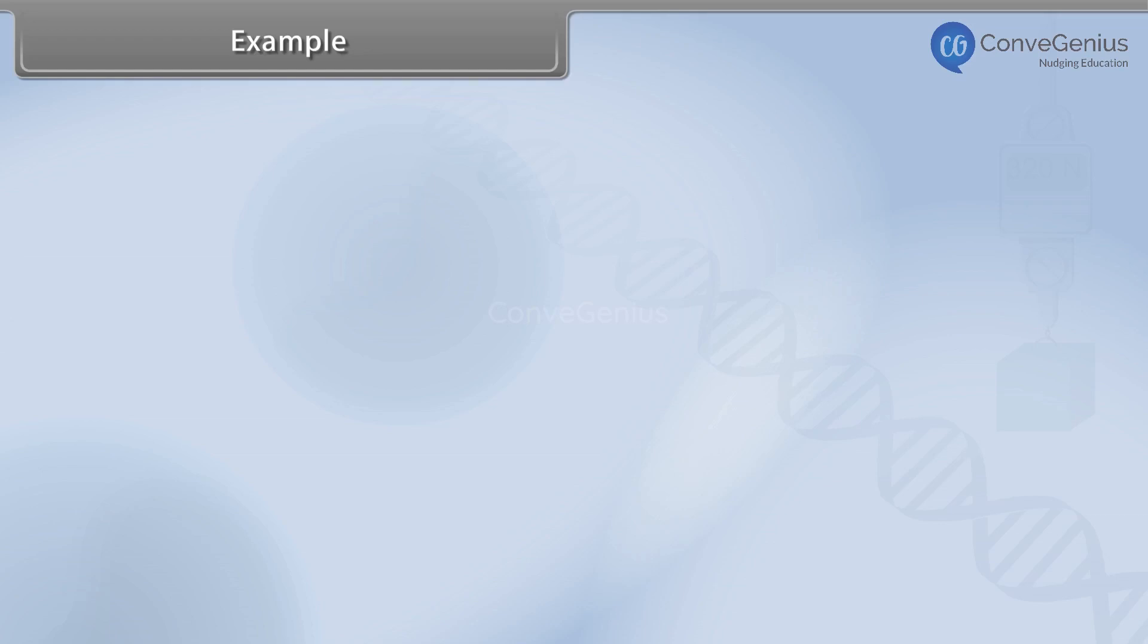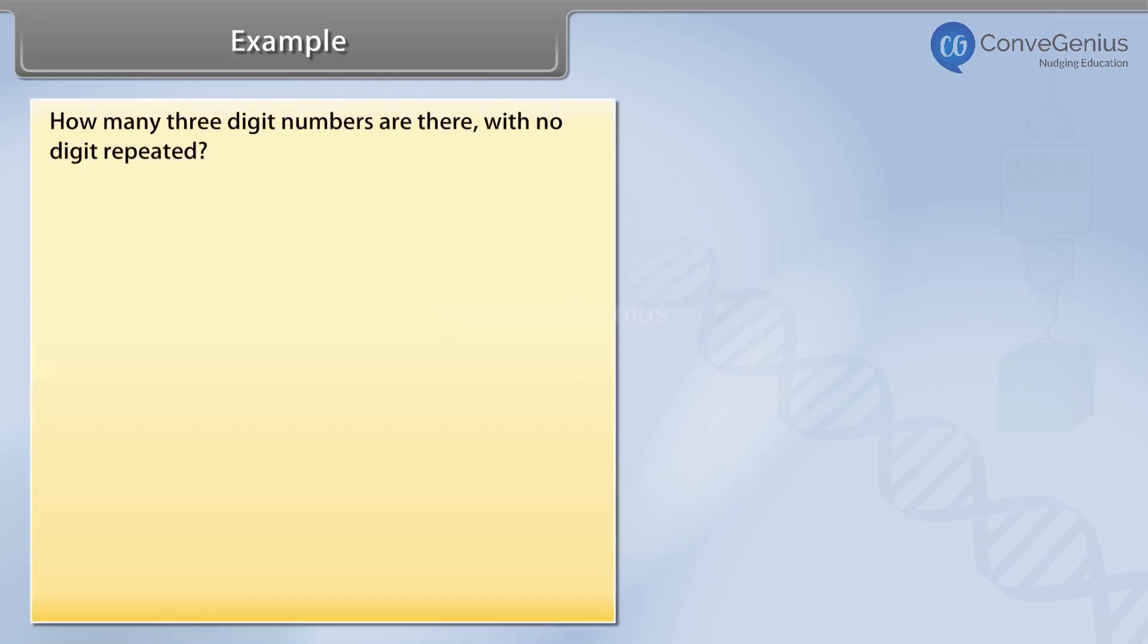Example: How many three-digit numbers are there with no digit repeated? Solution: There are ten digits,